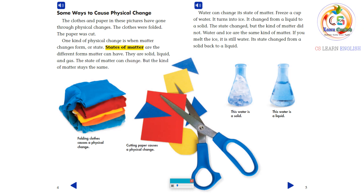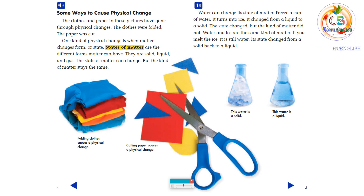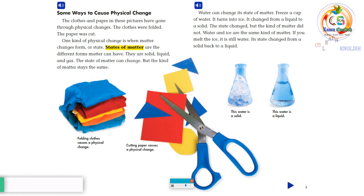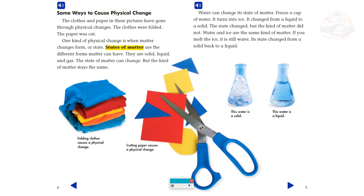Water can change its state of matter. Freeze a cup of water and it turns into ice. It changed from a liquid to a solid. The state changed, but the kind of matter did not. Water and ice are the same kind of matter. If you melt the ice, it is still water — its state changed from a solid back to a liquid.